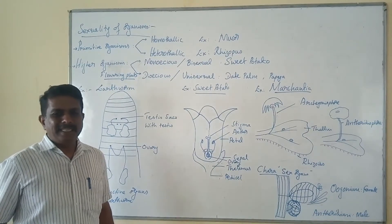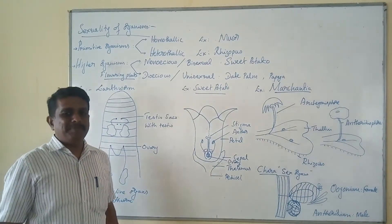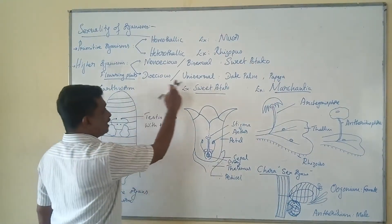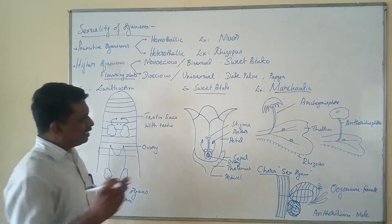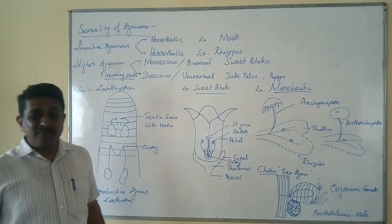In some plants the male and female flowers are borne on different plants; such plants are designated as dioecious or unisexual. This type of condition is naturally seen in case of date palm and papaya. Because of the unisexual condition, only the female flowers have the potentiality to bear fruits, so you can find the presence of fruits only in the female plants of papaya.